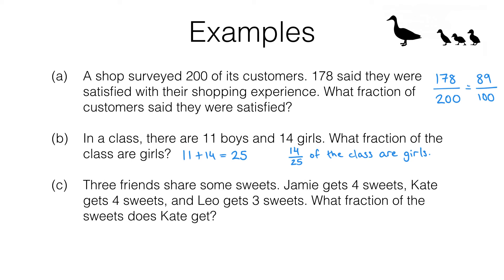Finally we've got part C. Pause the video and have a go at this one for yourself. Here's what you should have got. There were a total of four plus four plus three sweets in this question, so that's 11 sweets altogether. Jamie gets four of them, Kate gets four of them, and Leo gets the other three. We want to know what fraction of the sweets Kate gets. Kate is getting four out of the 11 sweets in total, which means Kate gets four elevenths of the sweets.